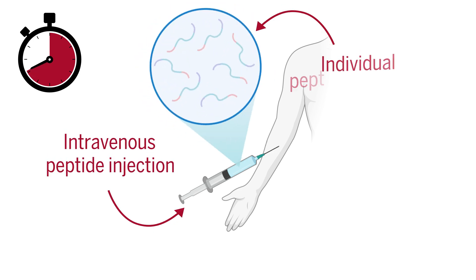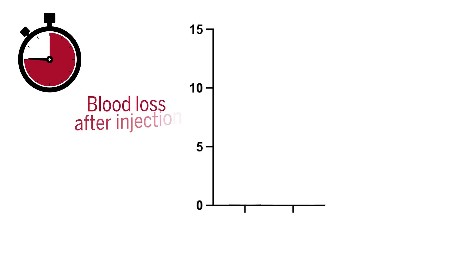In preclinical models, a single peptide injection was able to reduce blood loss by up to 90 percent.